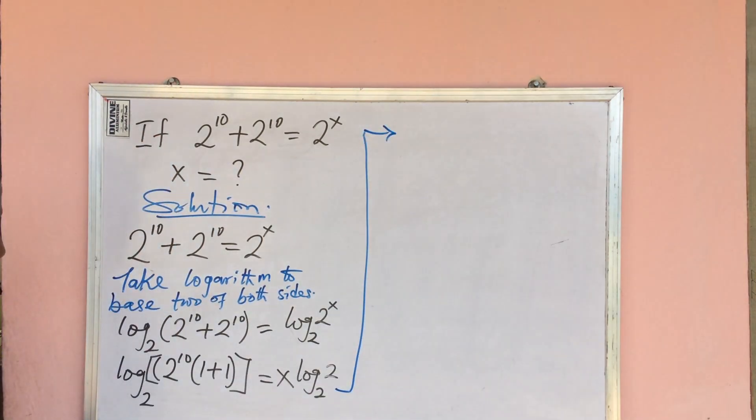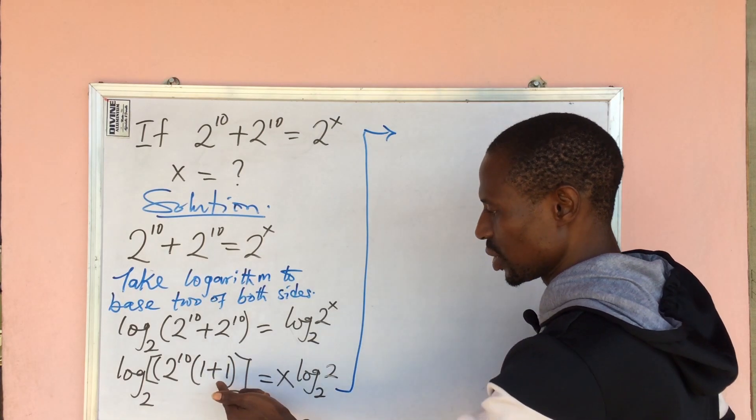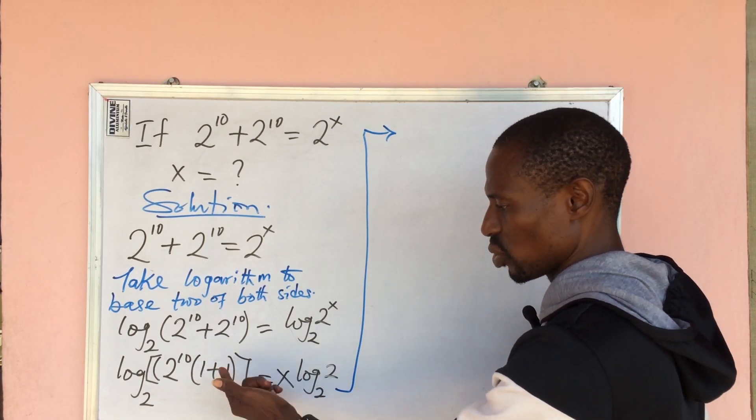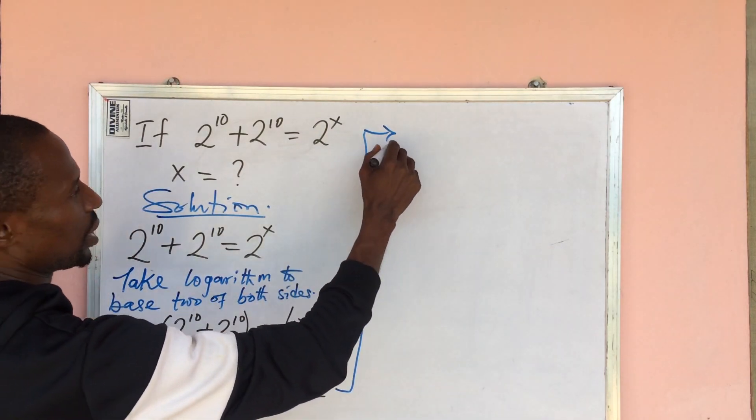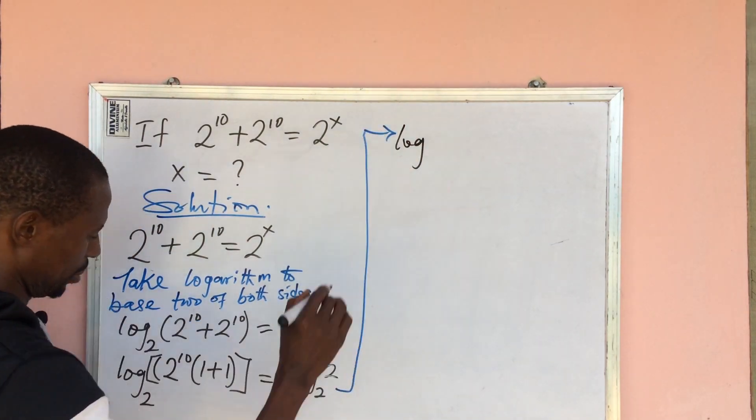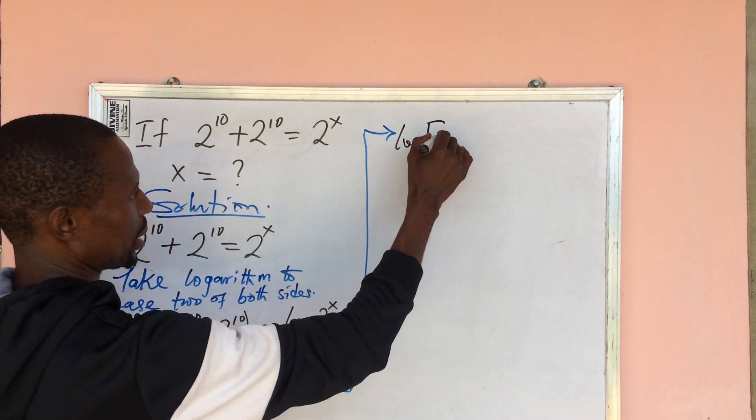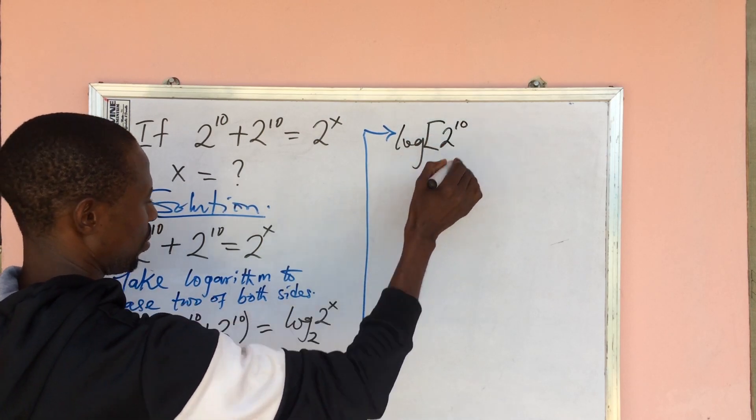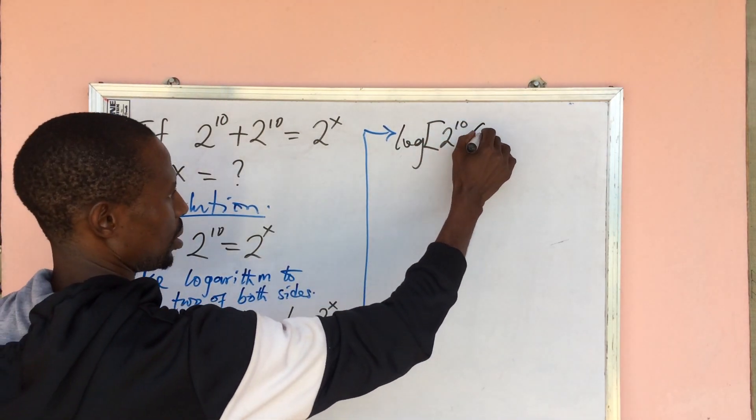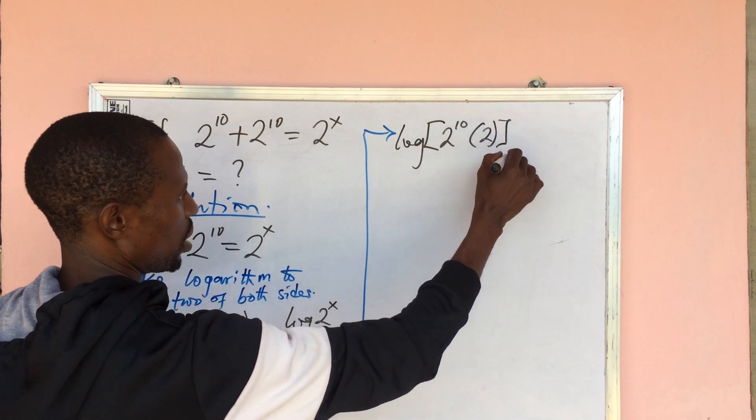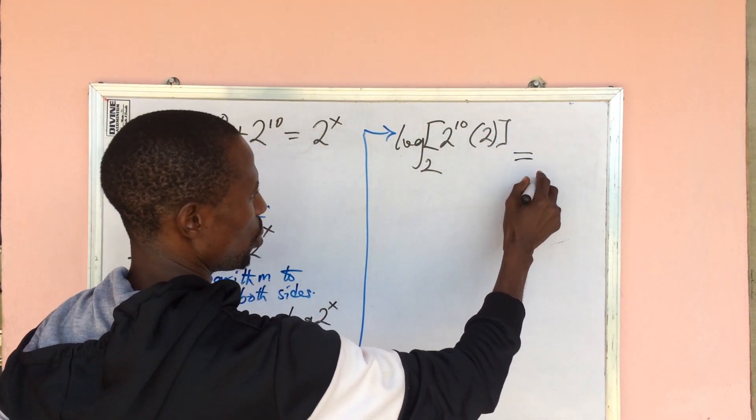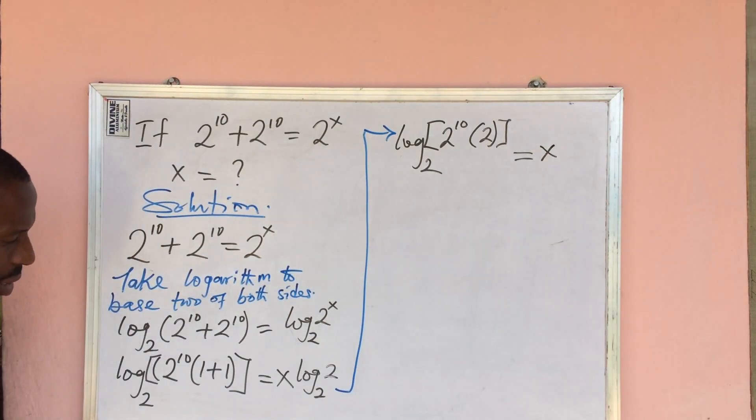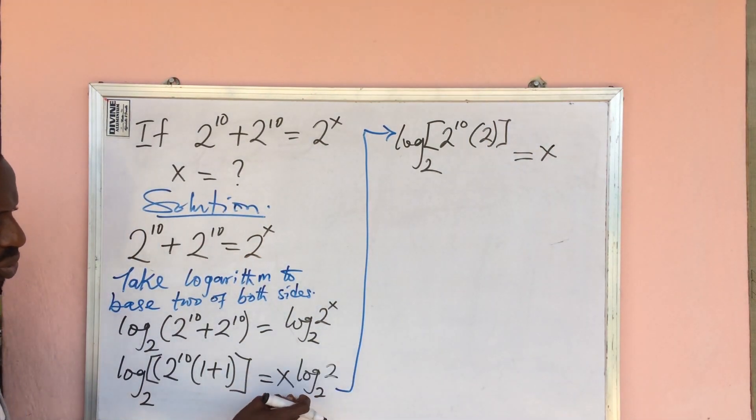If we proceed from here, 1 plus 1 will give us 2. The left hand side will give us log square bracket 2 to the power of 10 open bracket 2 close bracket base 2 equal to x, because log 2 base 2 will give us 1 and 1 times x will give us x.